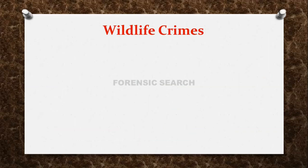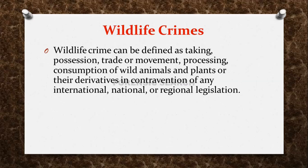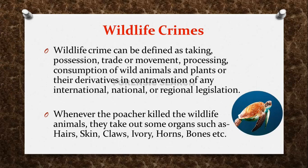Wildlife crimes can be defined as taking, possession, trade or movement, processing, or consumption of wild animals and plants or their derivatives in contravention of any international, national, or regional legislation. When poachers kill wildlife animals, they take out organs such as hairs, skin, claws, ivory, horns, bones, etc. Illegal transactions of certain plants also constitute wildlife crimes.